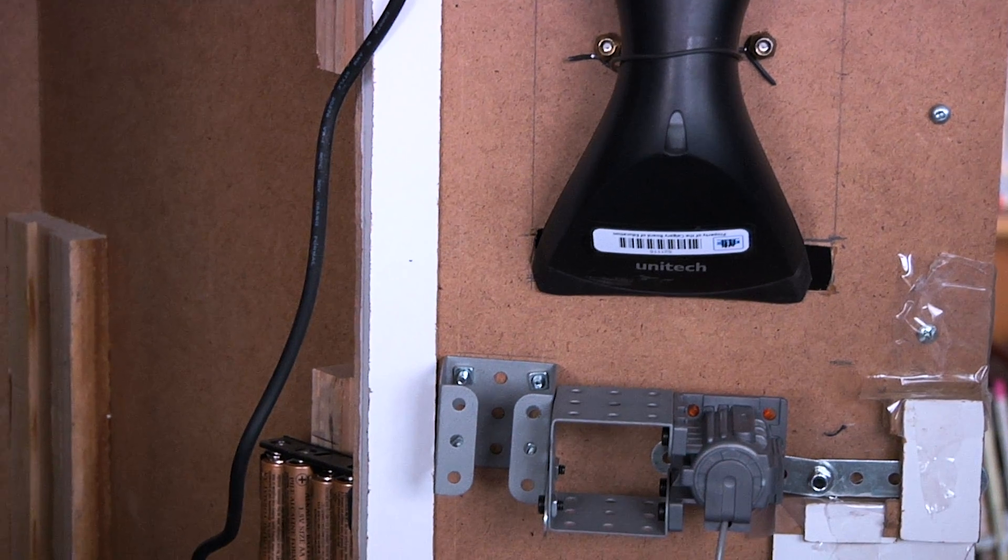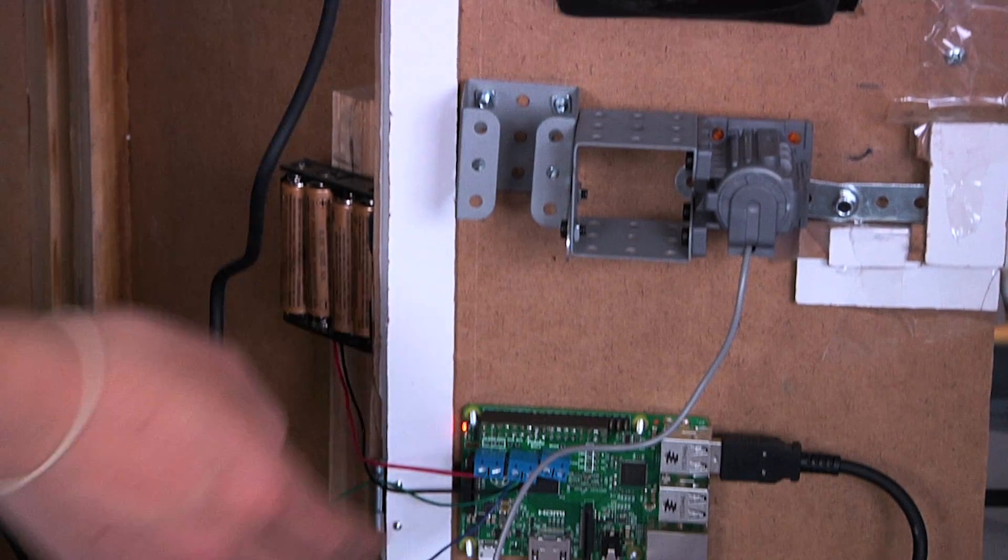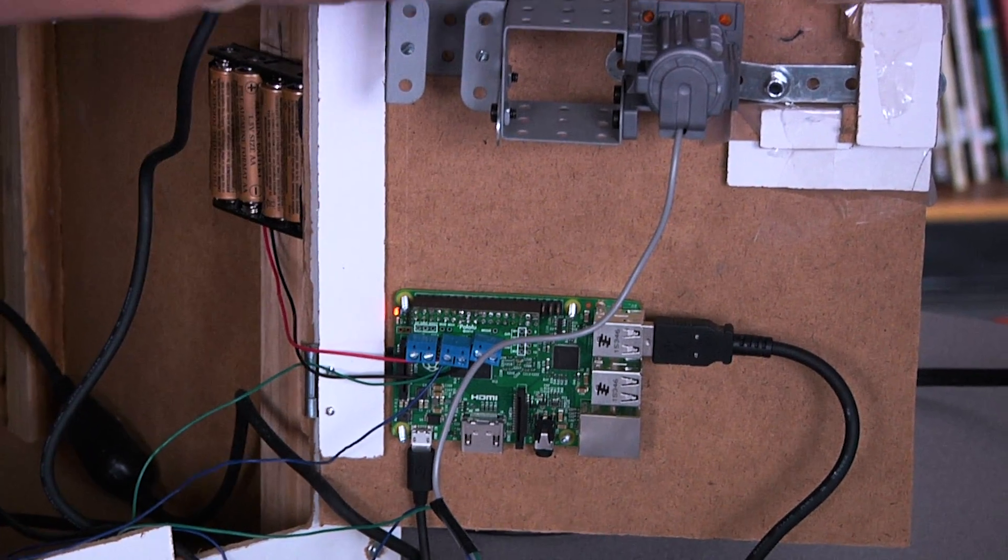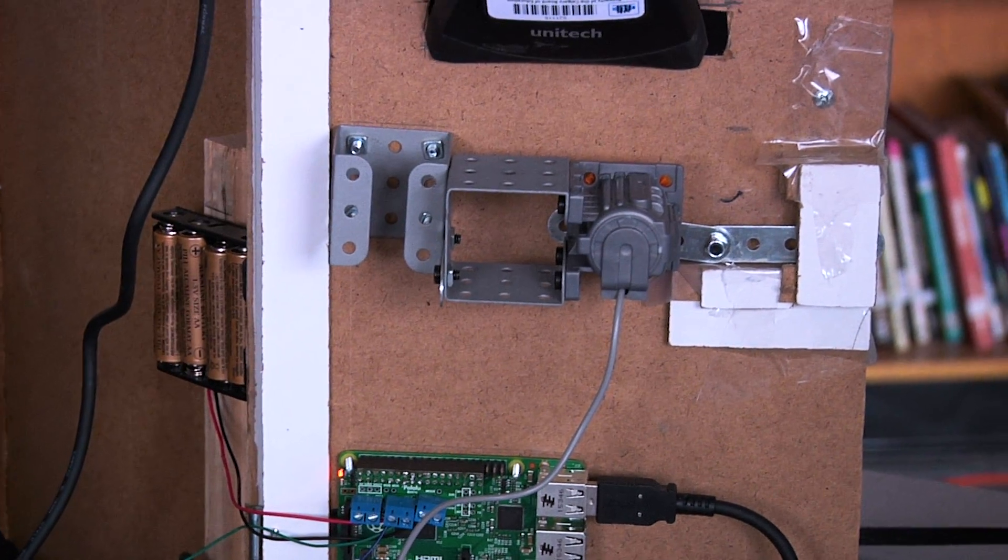This is the barcode scanner. It scans the ID card and sends a signal down to the Raspberry Pi. The Raspberry Pi then tells the GPIO pins to tell the servo motor to unlock or lock the locker.